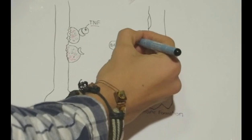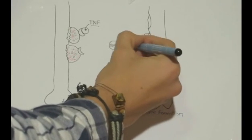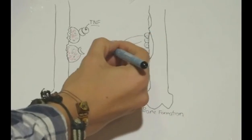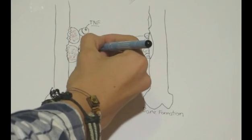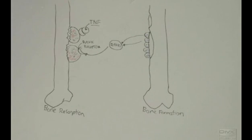Now RANK-L is secreted by osteoblasts and binds to the RANK ligand, and RANK ligand binds to the receptors on osteoclasts, stimulating bone resorption.